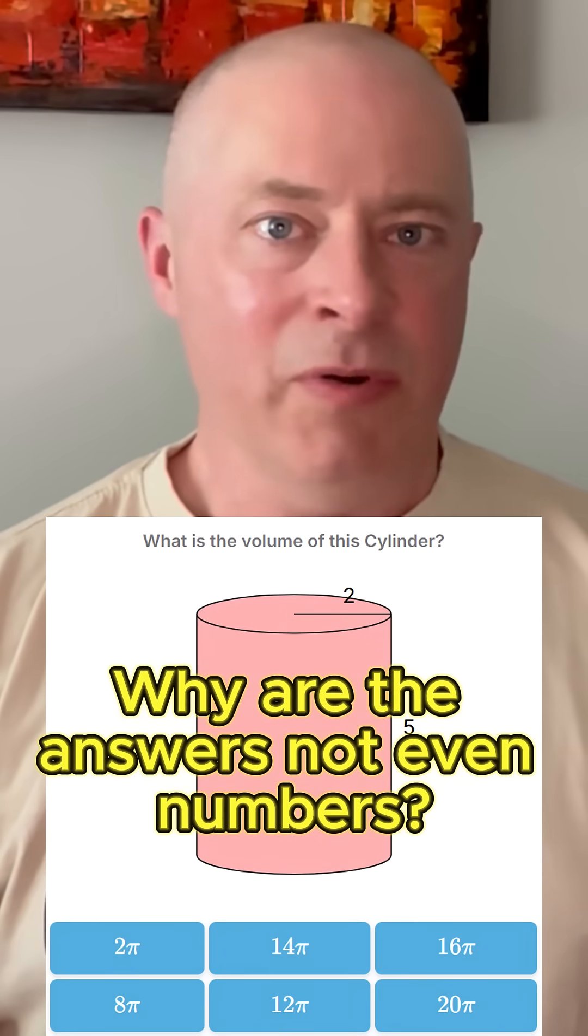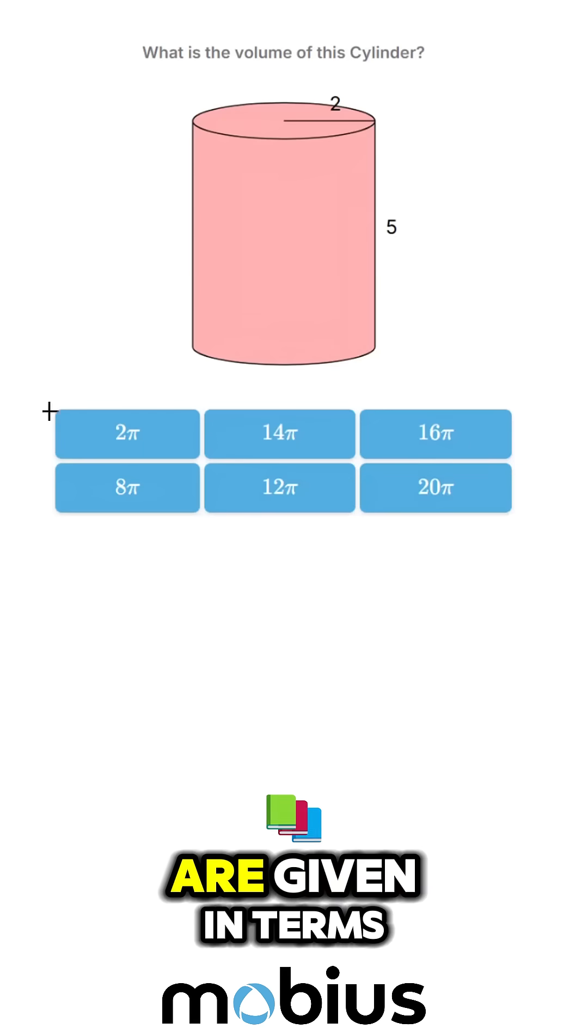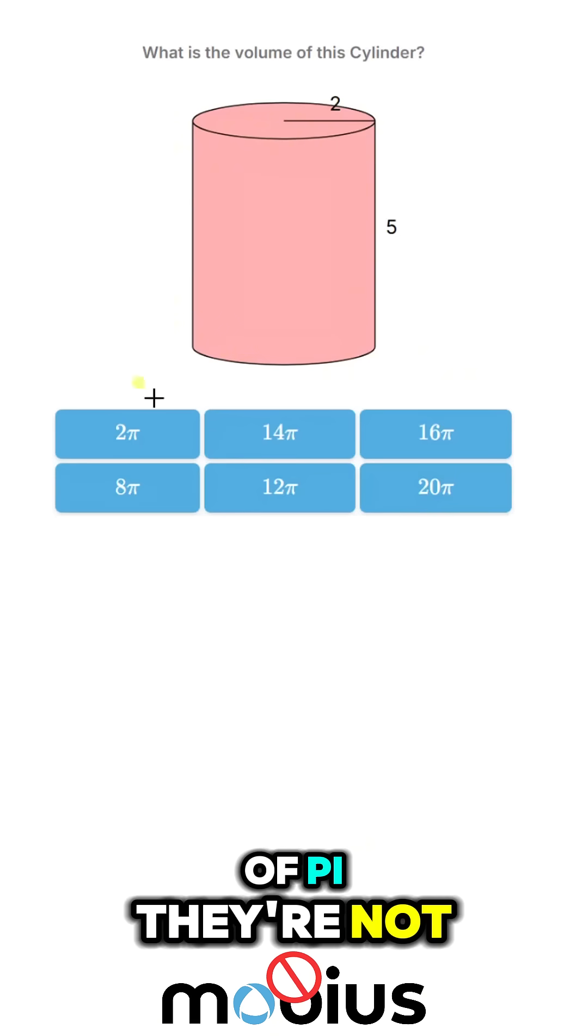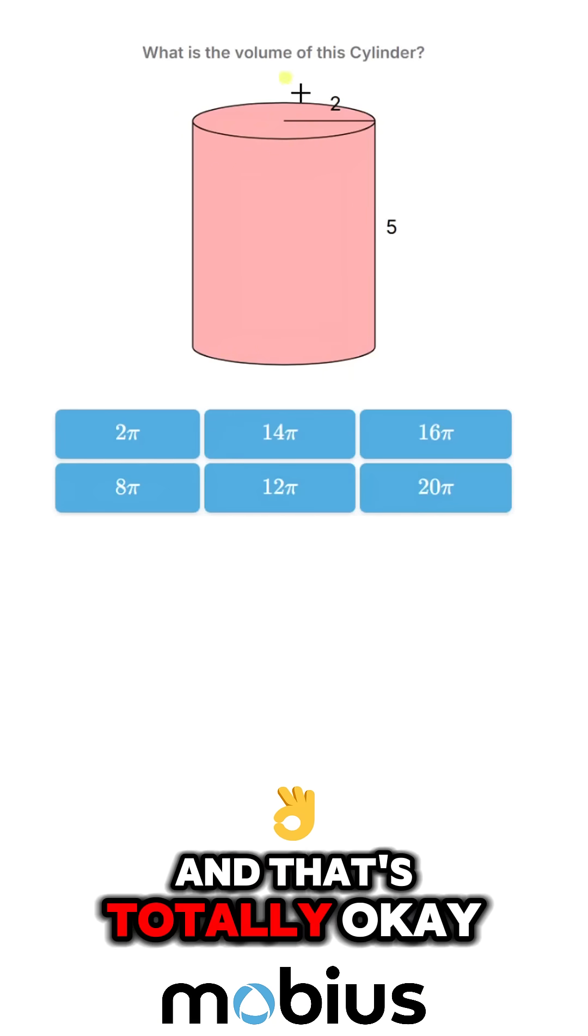Why are the answers here not even numbers? The answers to this volume problem are given in terms of pi. They're not decimal numbers like we might have been expecting, and that's totally okay.